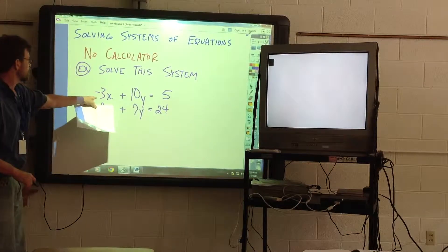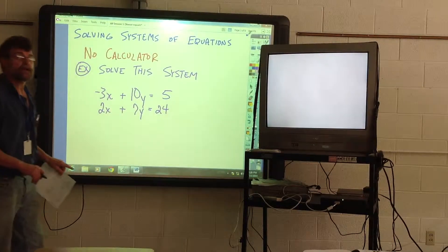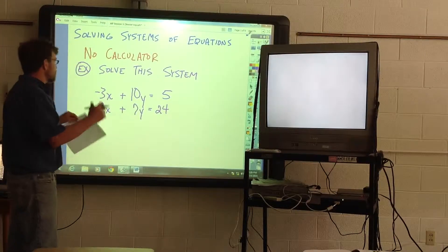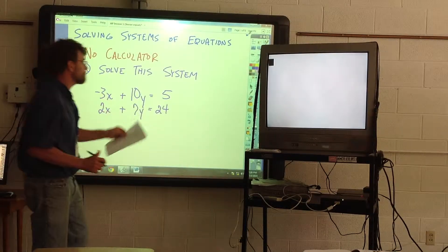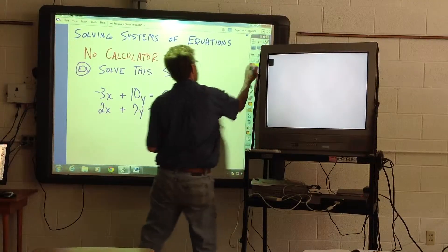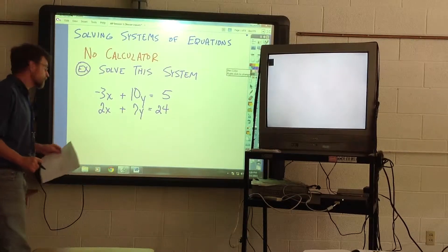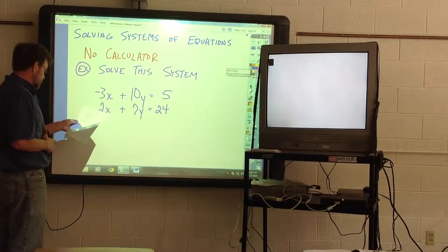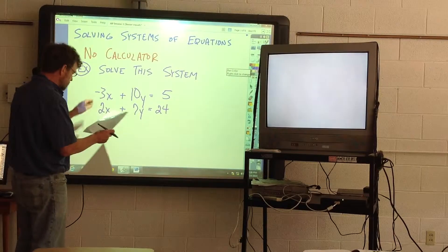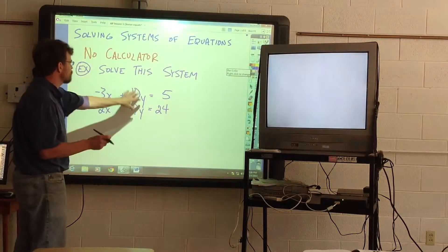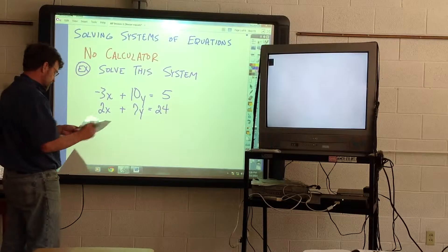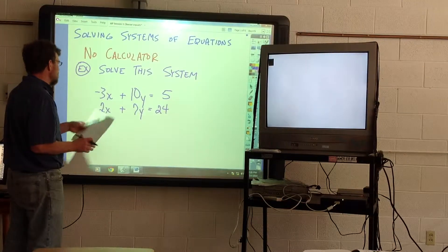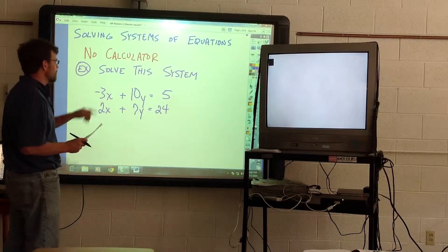We want to solve this system right here. In other words, we want to find a value for X and a value for Y that will make both of these true. And probably the best method to do this type of problem is I'm going to choose to eliminate one of the variables. And I will choose X. I will choose to eliminate X.